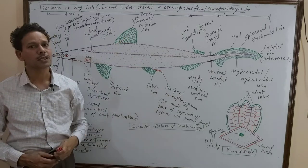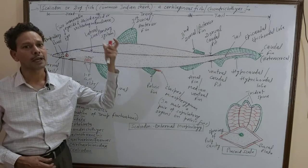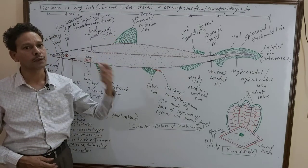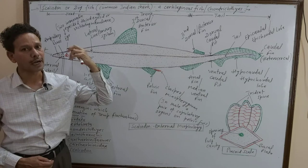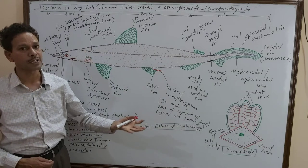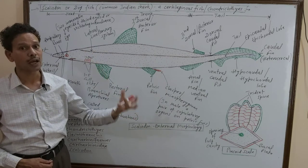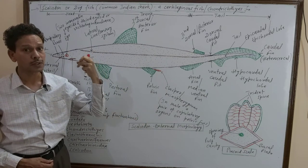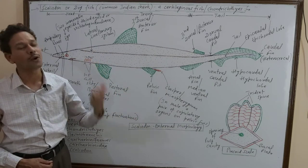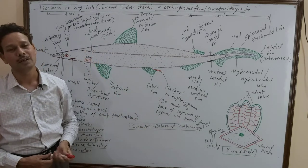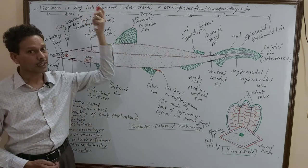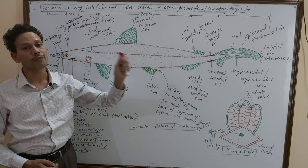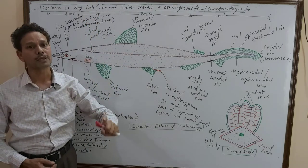Friends, today we will discuss a very important lecture on Scoliodon, that is a cartilaginous fish, also known as a type of shark — it is Scoliodon, the dogfish. This lecture is strictly for competitive exams.